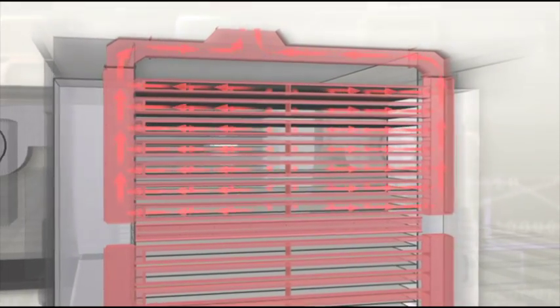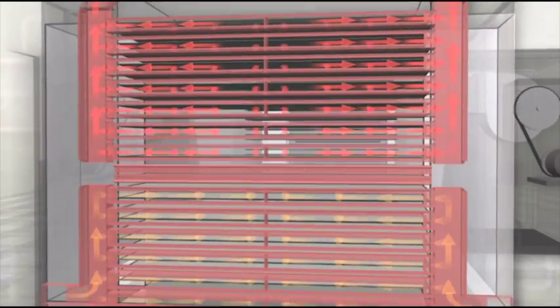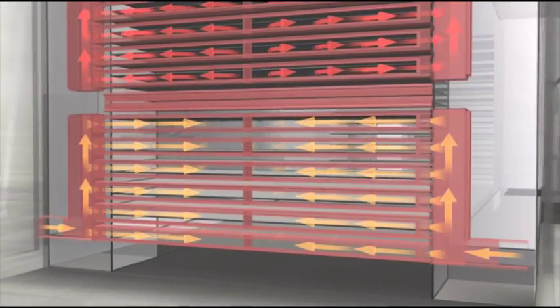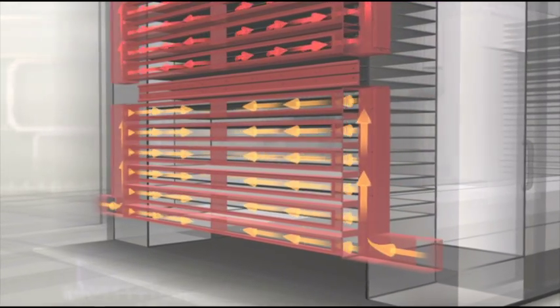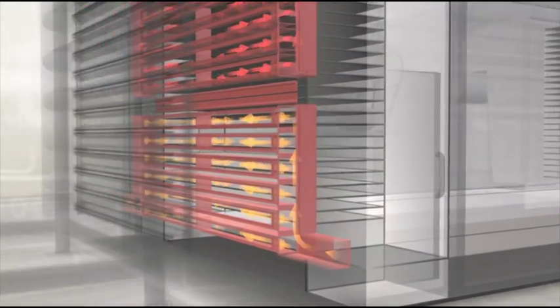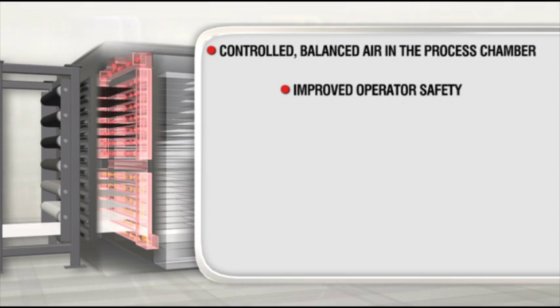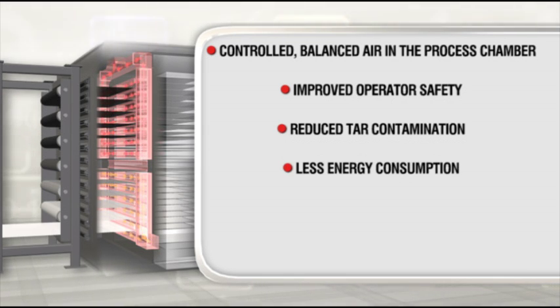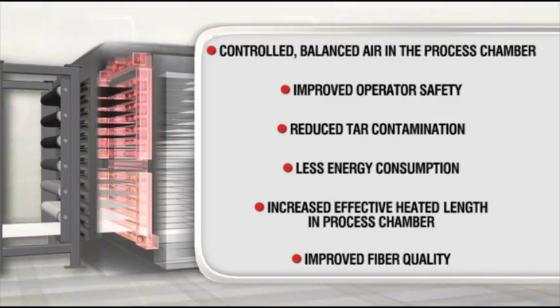At the same time, the second system introduces preheated fresh air into the chamber through an in-feed system at the point where the oven naturally draws air from outside the process chamber. The result is controlled balanced air in the process chamber, improved operator safety, reduced tar contamination, less energy consumption, increased effective heated length in process chamber, and improved fiber quality.